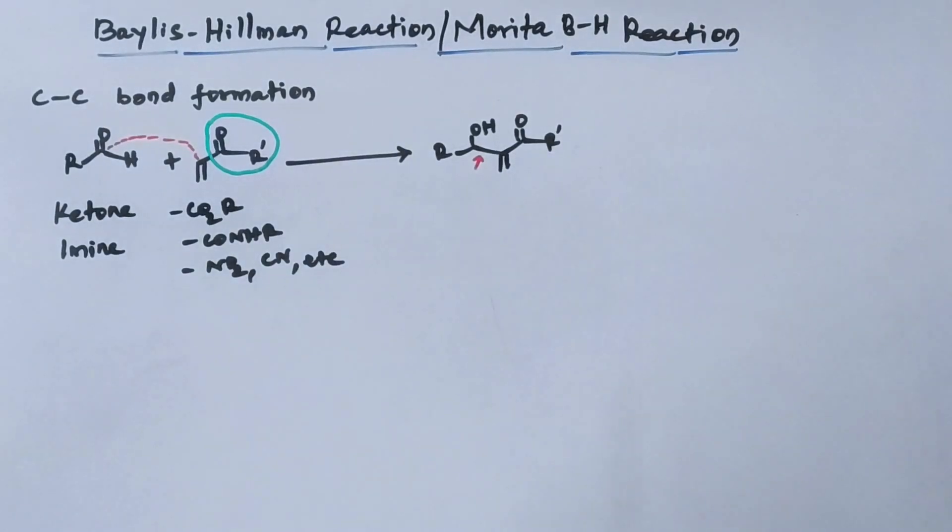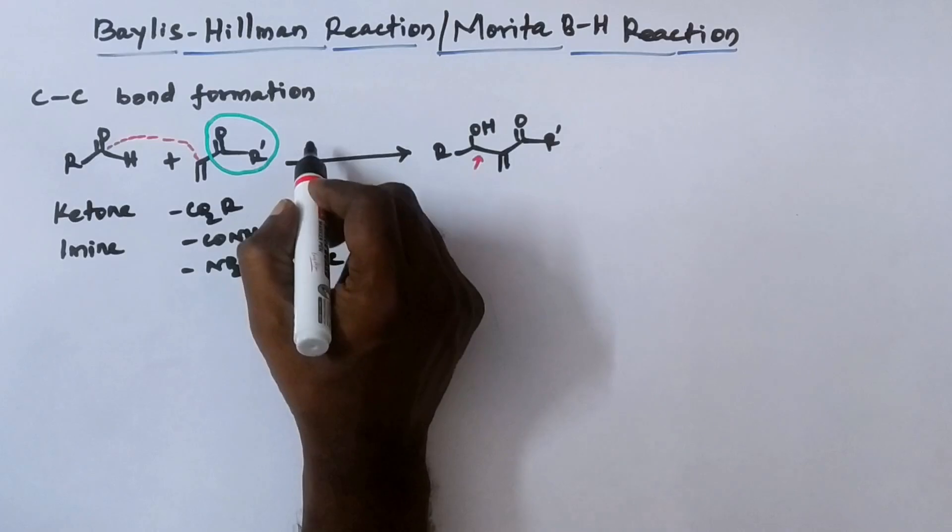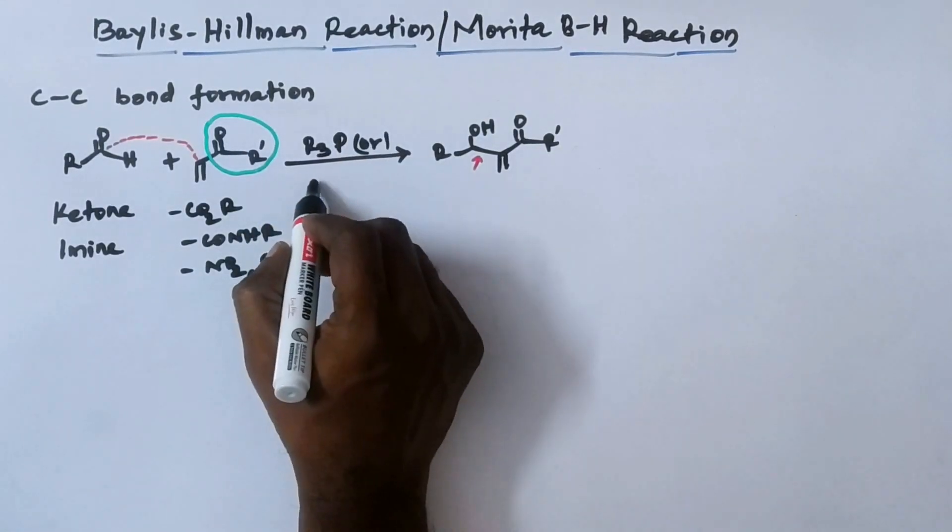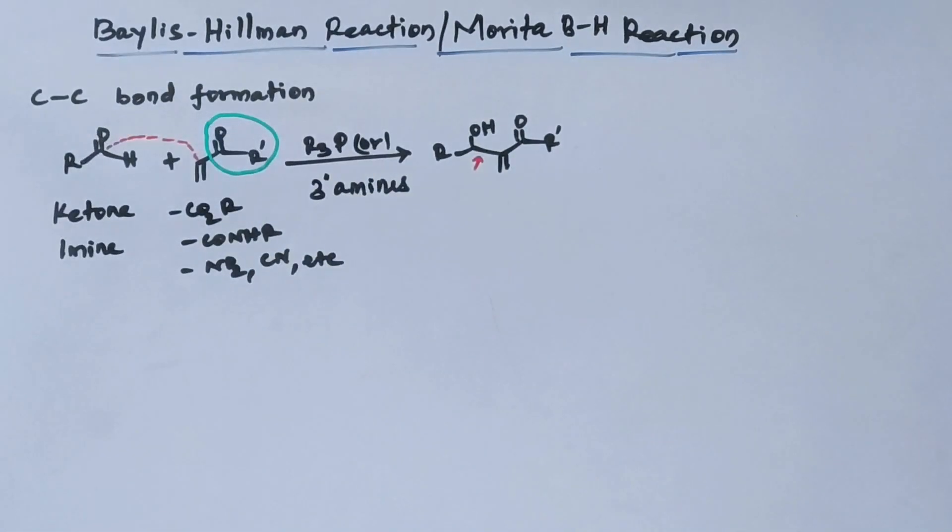And the base or catalyst that we can use here is phosphines or tertiary amines. These tertiary amines are supposed to be sterically hindered.